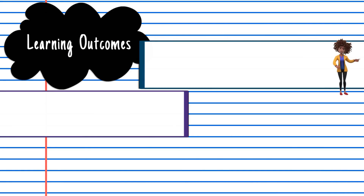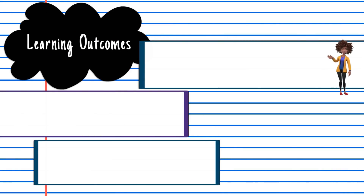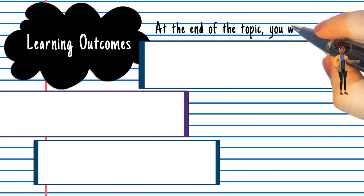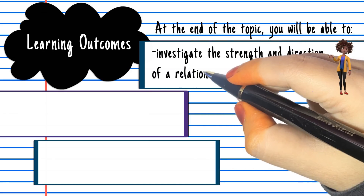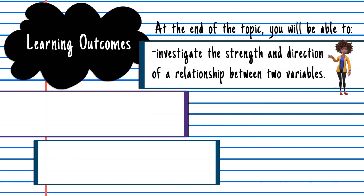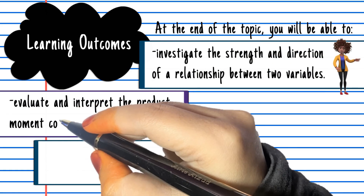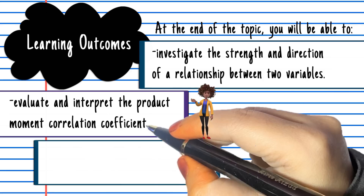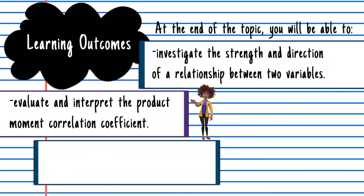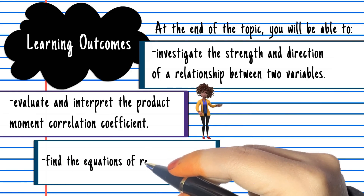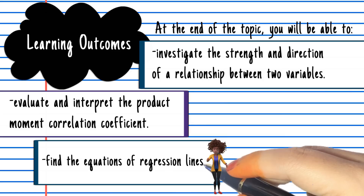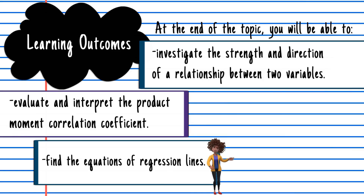At the end of the topic, you will be able to: 1. Investigate the strength and direction of a relationship between two variables. 2. Evaluate and interpret the Product Moment Correlation Coefficient. 3. Find the equations of regression lines.